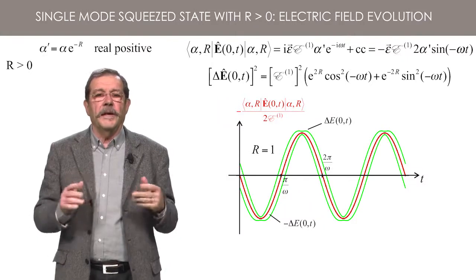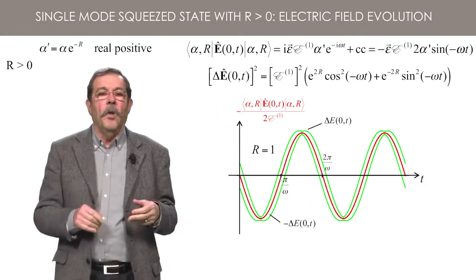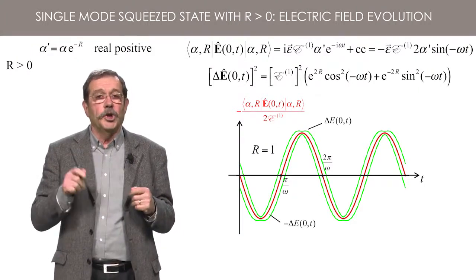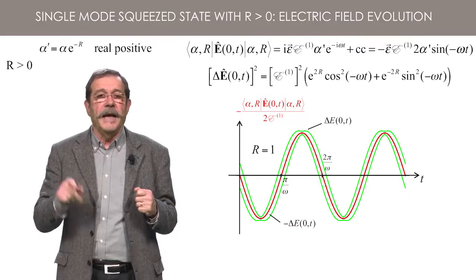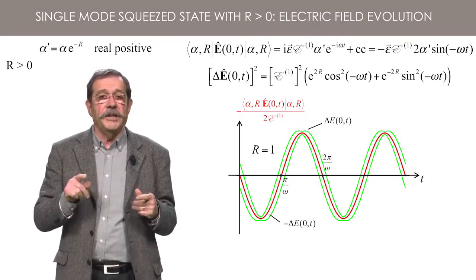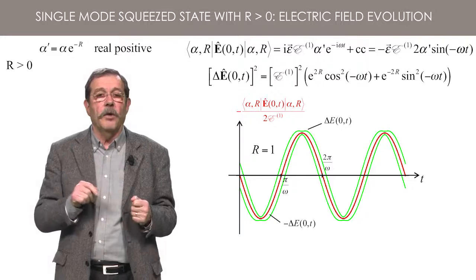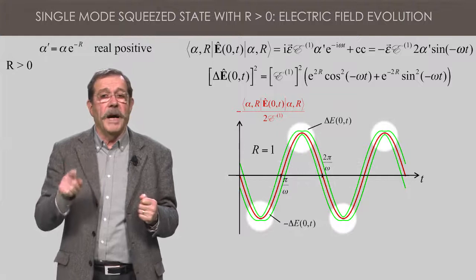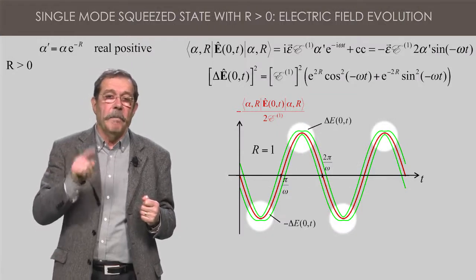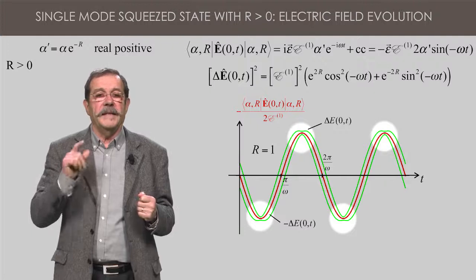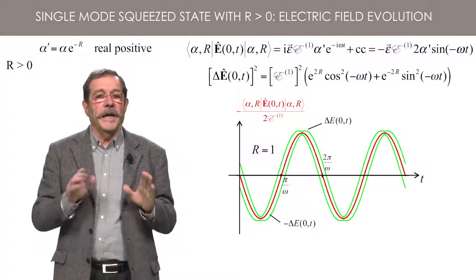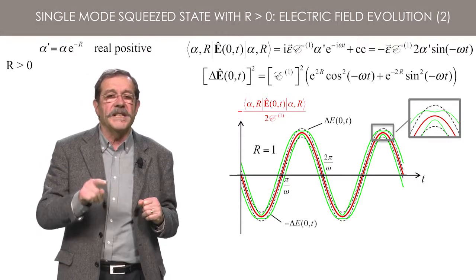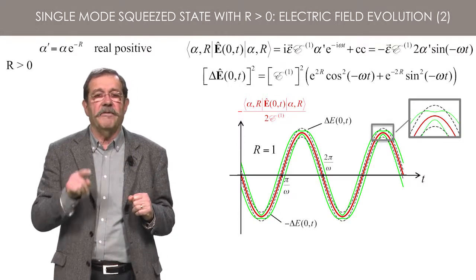Consider now the case of positive r, while alpha is still real and positive. The plot shows the evolution of the field and its dispersion. The standard deviation is maximum at omega t equals 0, pi, etc., while it is minimum at omega t equals pi over 2, 3 pi over 2, etc. Again, the dotted black lines represent the standard deviation for a quasi-classical state with the same average evolution.